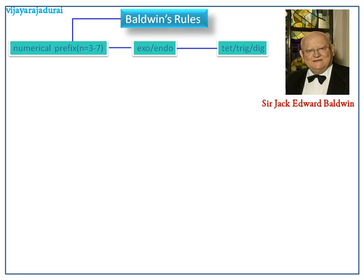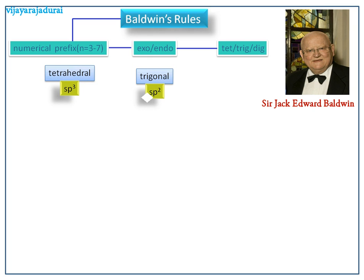Here, Tet means tetrahedral, that is sp3 hybridization. Trig means trigonal, that is sp2 hybridization. Dig means diagonal, that is sp hybridization.